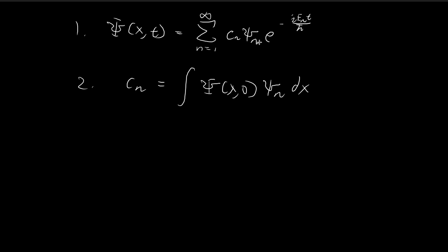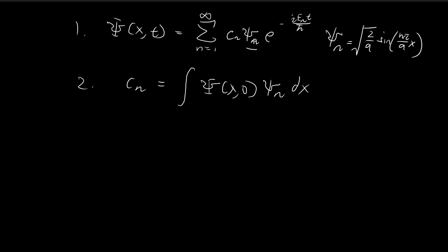At this point, we know that the wave function can be expressed as this summation. In particular, in the last three videos we've been focusing on the infinite square well, where we found that xi_n is equal to this sine function — n pi divided by a, times x. So this is the most general solution to the Schrödinger equation, and these c_n's are unspecified; they can be whatever they want to be.